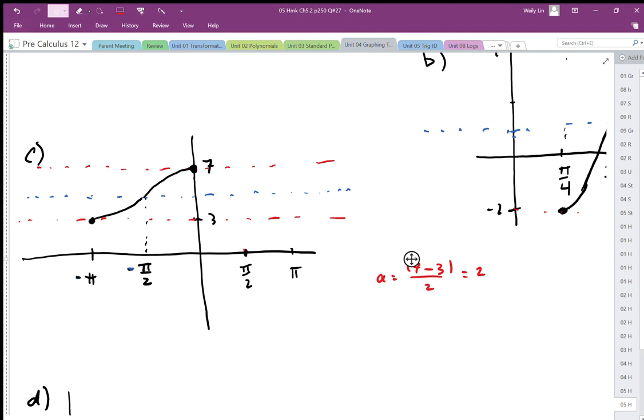So there's my amplitude. My vertical shift is going to be halfway in the middle here, which is going to be 5. And again, we can do that by an average of 7 plus 3 divided by 2 gives us the average of 5.